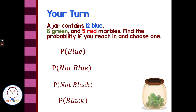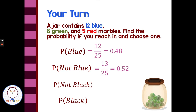Welcome back. The probability of a blue marble: I have 12 blue, 8 green, and 5 red — those are all the marbles in the jar. The probability of drawing a blue marble would be 12 out of 25, or 0.48 as a decimal. Not blue: 8 green and 5 red are not blue, so there are 13 marbles that are not blue out of 25. The probability of not blue is 13 over 25, or 52%.